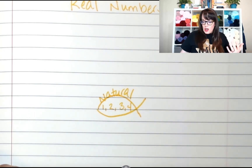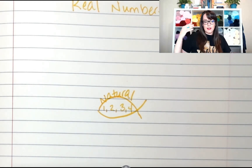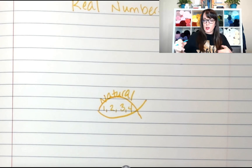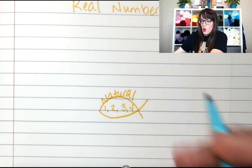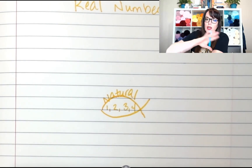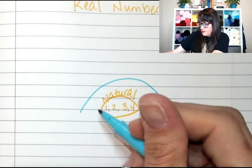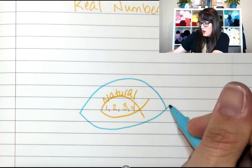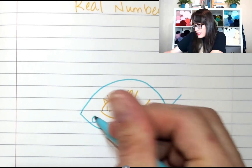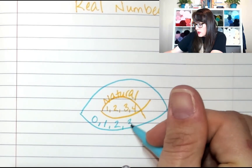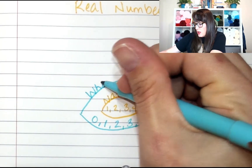Now let's talk about zero. At some point, somebody explained that there was a zero, and we looked at a number line and saw: zero, then one, then two. When you throw in the idea of zero, we're talking about whole numbers. Draw a little bit bigger fish, because there's really not much difference between whole numbers and natural numbers except for zero. These are called whole numbers.